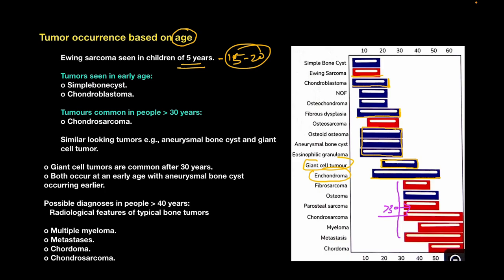For examination purposes, remember that tumors seen in early age include simple bone cyst and chondroblastoma. Tumors common in people over 30 years include chondrosarcoma. Similar-looking tumors are aneurysmal bone cyst and giant cell tumor — but giant cell tumors are commonly seen after 30 years, while aneurysmal bone cyst generally occurs before 30 years, so both occur at an early age with aneurysmal bone cyst occurring earlier.